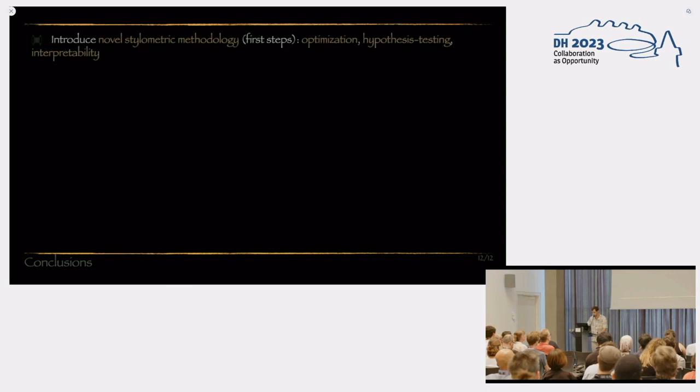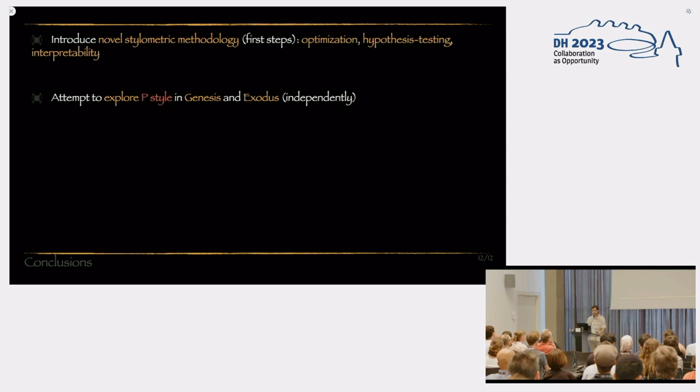And with that, I'd like to conclude very briefly. So we introduce this novel stylometric methodology, or rather the first steps thereof, where we optimize, perform hypothesis testing and interpretability analysis. We attempt to explore the style of the priestly constituents in the book of Genesis and Exodus independently. We get 78% and 90% optimal overlap with both books respectively. Both are statistically significant signals.